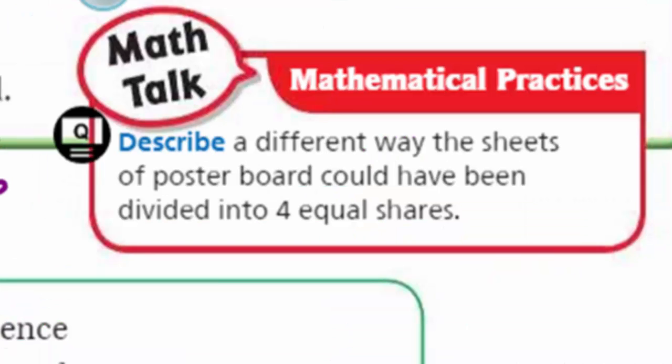So, each friend will get one and one half sheets of poster board. And here we have mathematical practices, it says, for math talk. Hey, George, you still there? I am. Describe a different way the sheets of poster board could have been divided into four equal shares. I suppose each friend would get maybe one whole sheet and the remaining two sheets would be divided into halves. Each friend would get that one sheet and half of another sheet. Because that's what our answer turned out to be anyway.